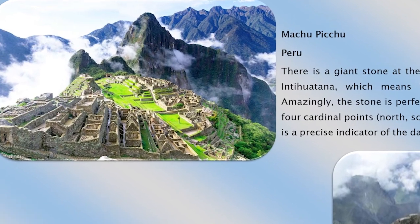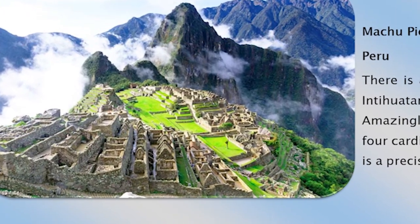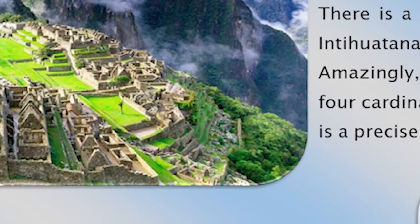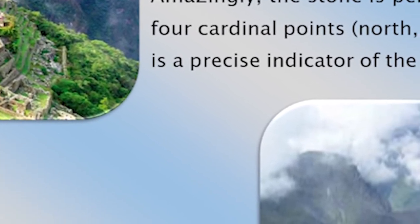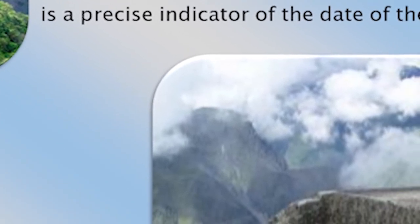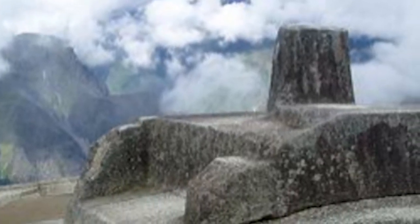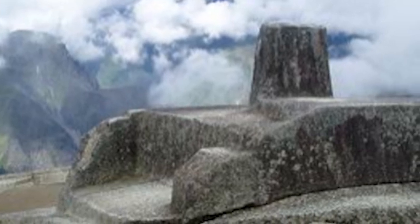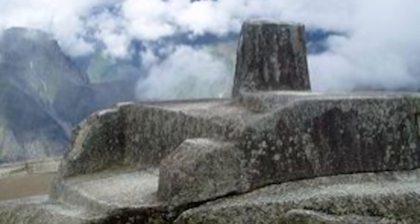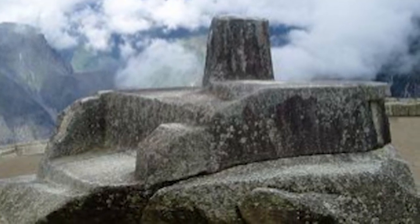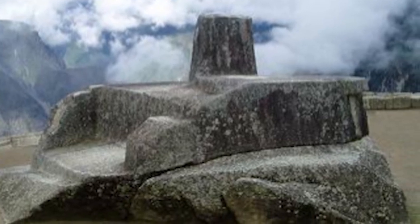Machu Picchu, Peru has a giant stone at the top of this sacred mountain called Intiwatana, which means 'the place where the sun gets tied.' Amazingly, the stone is perfectly positioned so each corner sits at the four cardinal points — north, south, east, and west. Therefore the stone is a precise indicator of the date of the two equinoxes; it's a solar clock. The sun aligns just at the right moments for certain times of year, and they can track the sun that way.